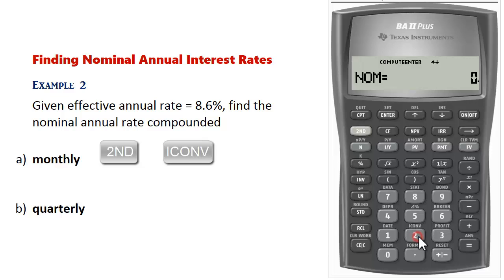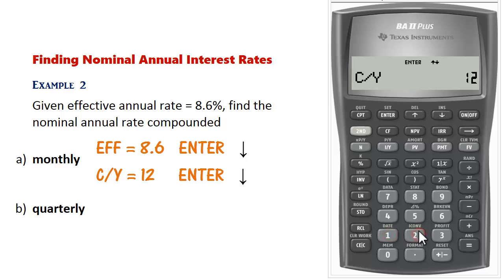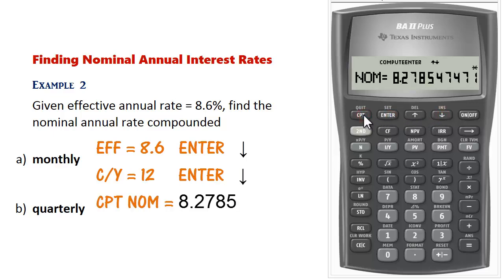Go to 2nd, interest conversion. Since we have the effective rate, scroll up to effective — or you can scroll down once and you'll be in the effective input mode. Enter the effective rate of 8.6%. An effective rate of 8.6% is equivalent to 8.2785% compounded monthly.